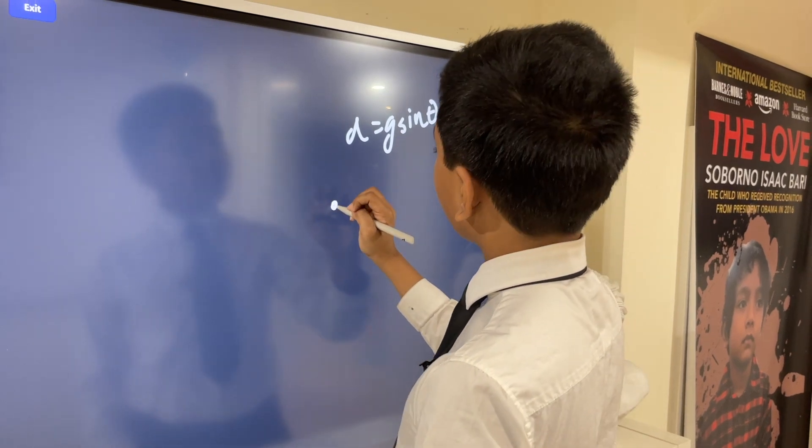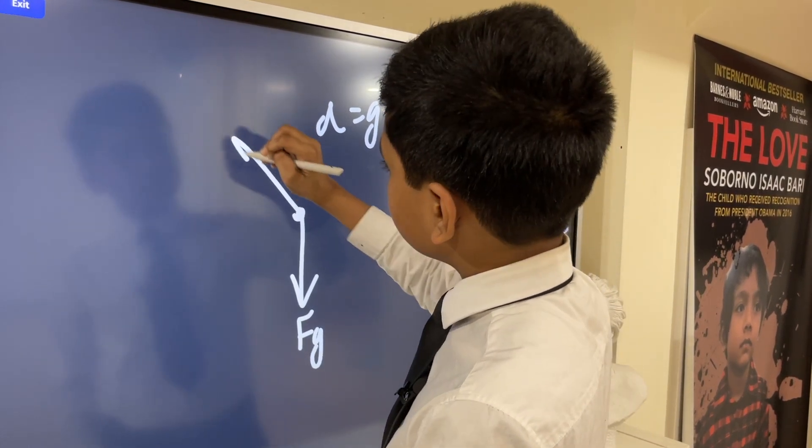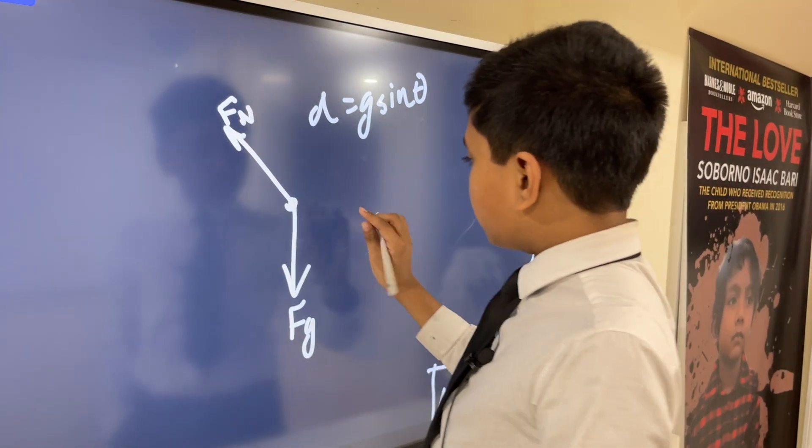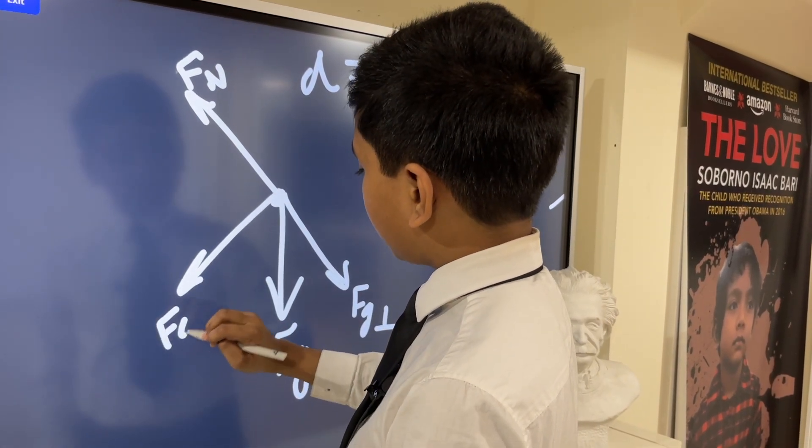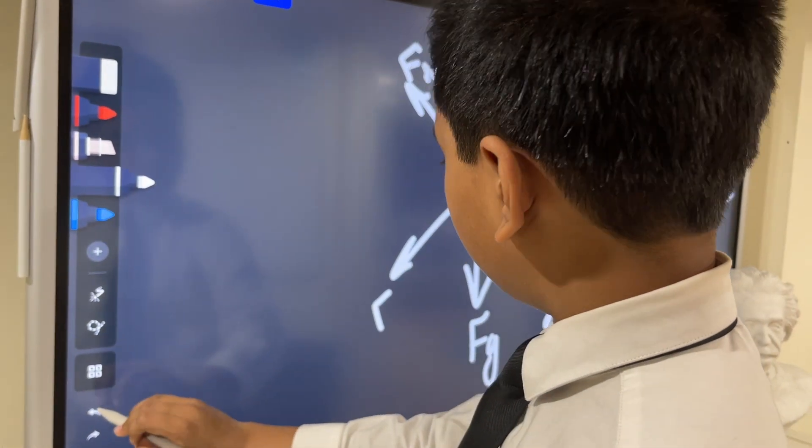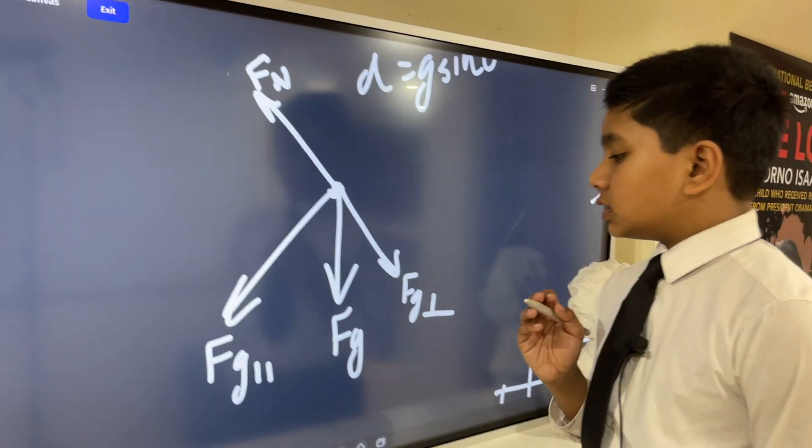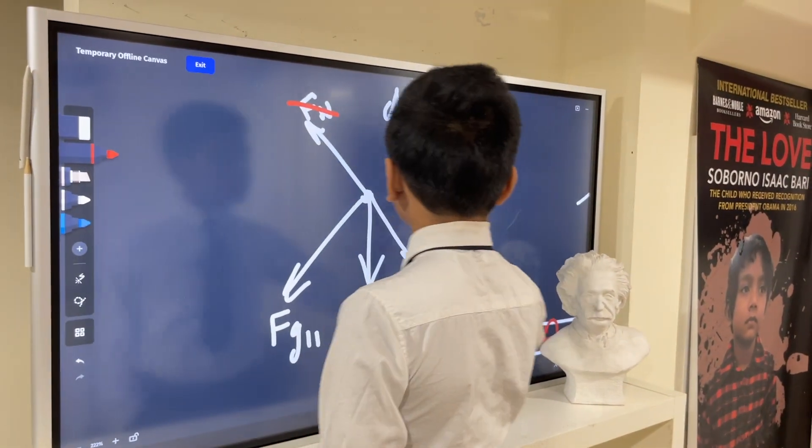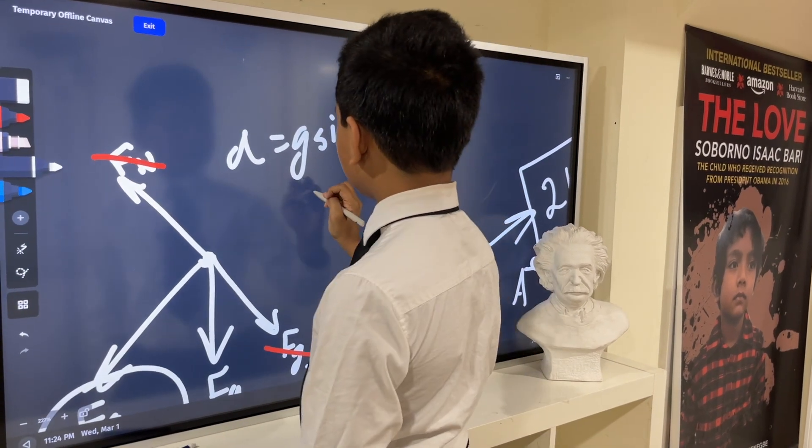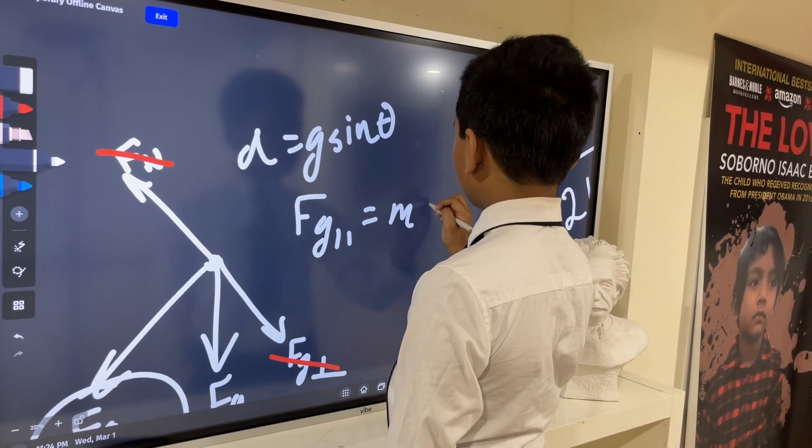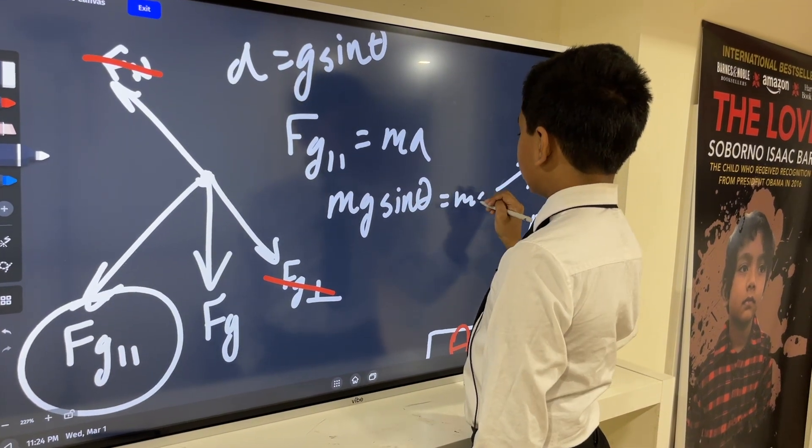If you draw a free-body diagram of the box on here, then you simply have FG and FN. FG can be broken up into two components: FG perpendicular and FG parallel. Actually, FG parallel would point the other direction, but you get my point. These two are going to cancel out because they're both FG cosine theta, which simply leaves FG parallel. If FG parallel is the only force, then we can say that's the net force, and that's equal to MA. This is mg sine theta equals MA, and thus A equals g sine theta.